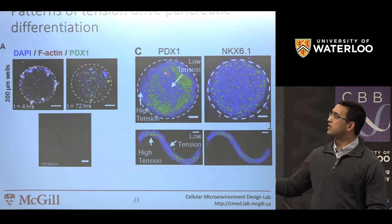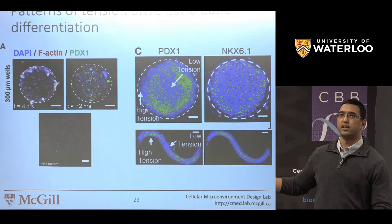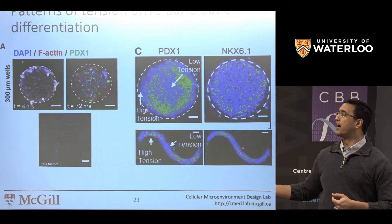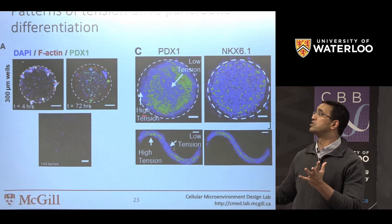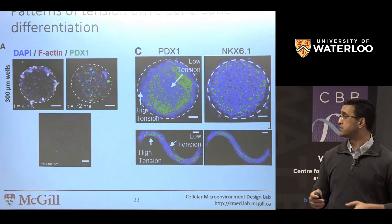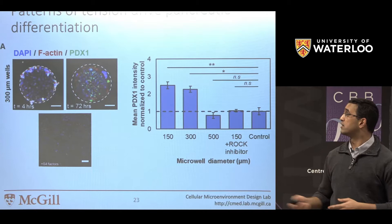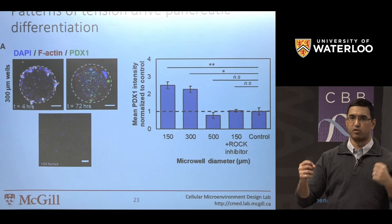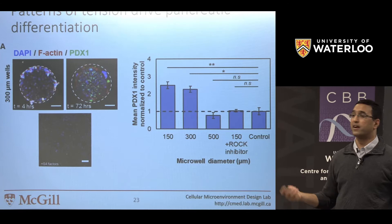We've also done this with wavy cultures, looking at histograms of PDX1 and NKX6.1 expression. Consistently, in regions of high tension, you get increased expression of these markers. The mechanical environment is really connected to the way these stem cells differentiate. We further proved this by knocking out ROCK, a strong regulator of mechanobiological processes — once you knock it out, you don't see that effect anymore. So mechanics is genuinely driving something in this process.